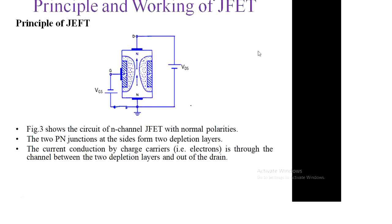For our syllabus, we are going to see the N-channel JFET. The structure of the N-type JFET has already been introduced. In the N-type JFET, the N-substrate is sandwiched between two P-type materials. In this figure, this is the N-type substrate with P-type substrate over it. JFET has three terminals: gate, drain, and source.